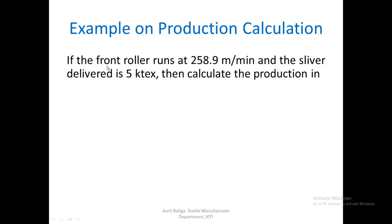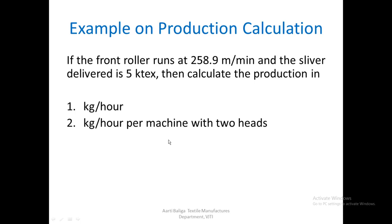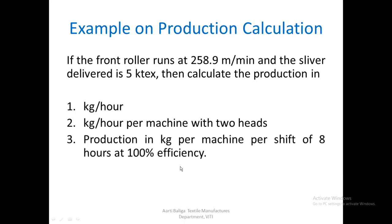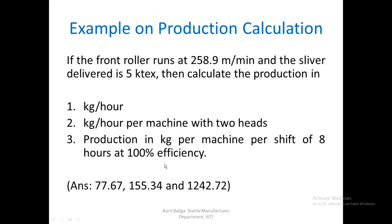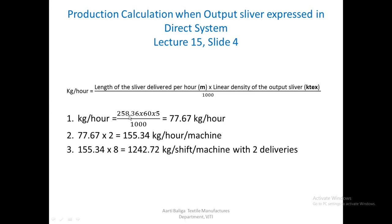We come to the production problem that was given earlier. We were given the front roller speed as 258.9 meters per minute and sliver delivered as 5 kilotex. We had to calculate production in kg per hour per machine with two heads, and production in kg per machine per shift of 8 hours at 100% efficiency — and these were the answers.